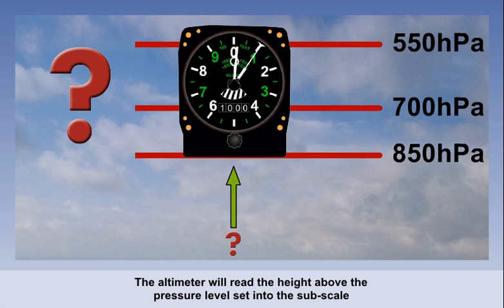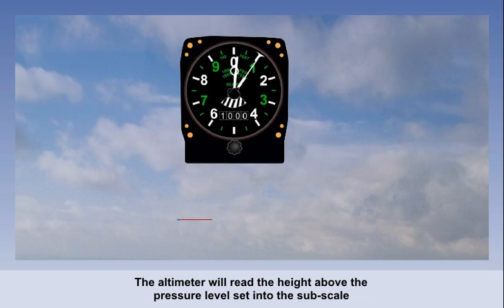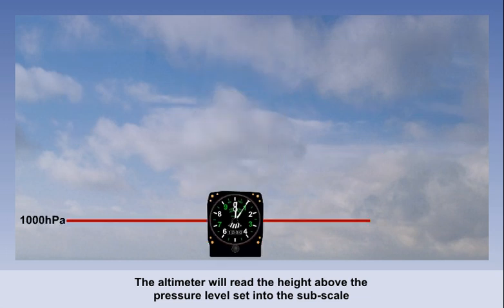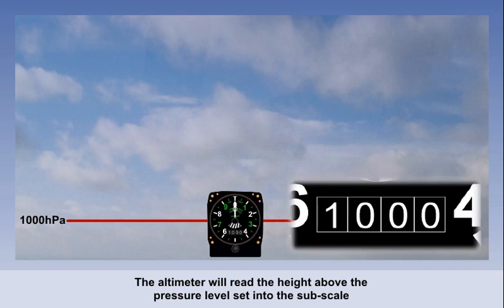We can tell the altimeter what pressure to start from, but not what physical place. This is done by means of an adjustable subscale. This is a small window in the face of the altimeter, which has a pressure value, either in hectopascals or inches of mercury.